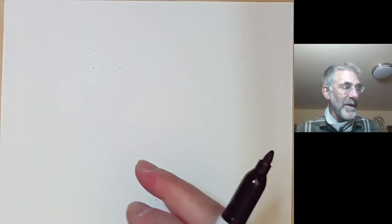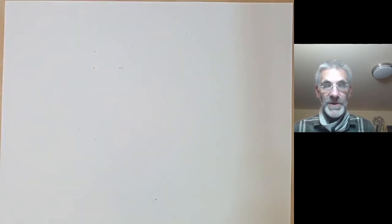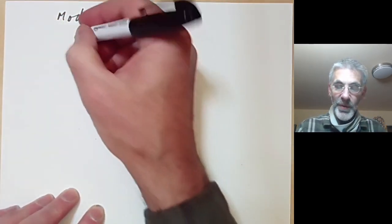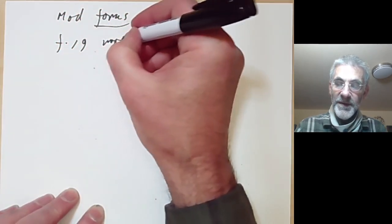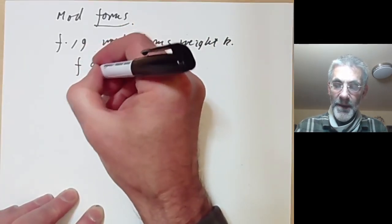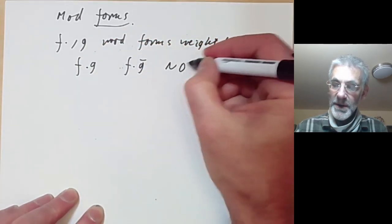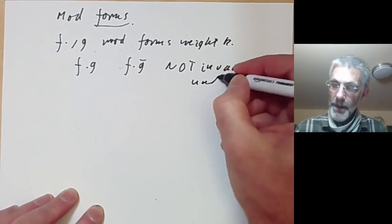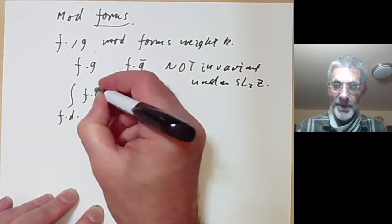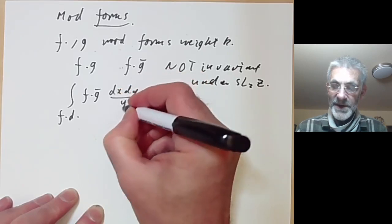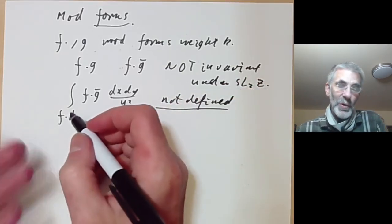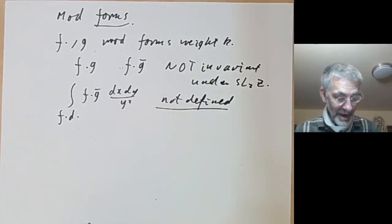We are not going to discuss the inner product for modular functions much further; we really want to do it for modular forms. Here we have the problem that if f and g are modular forms of weight k, then f times g-bar is not invariant under SL(2,Z), and this means the integral over a fundamental domain of f times g-bar times dx dy over y squared is not well-defined — it depends on the choice of fundamental domain.